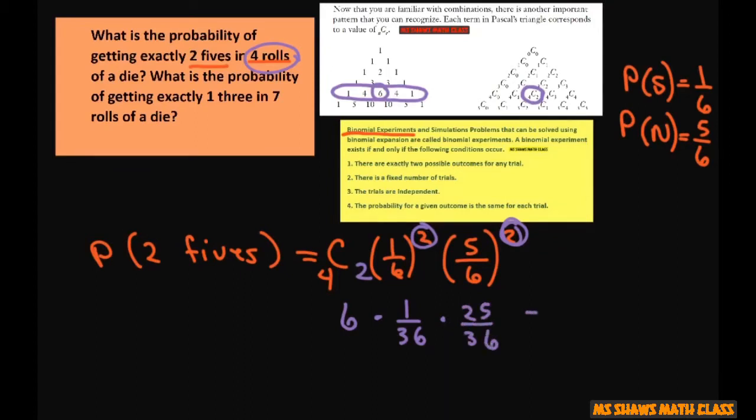And this gives you, this right here is going to be one sixth times 25 divided by 36, and this all equals 25 divided by 216. You use a calculator, you should get approximately 0.116.